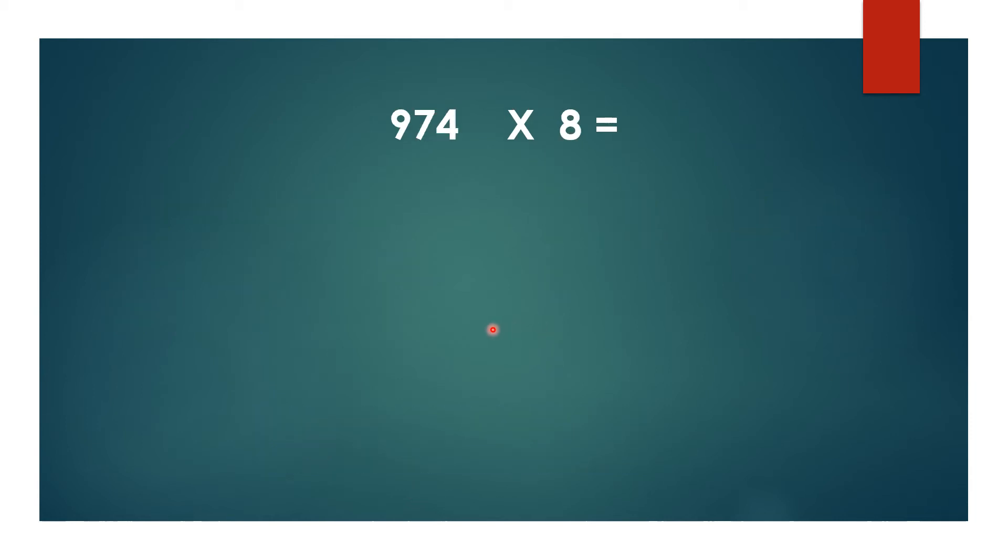Now let's multiply 974 into 8. Three digits here, so the answer is divided into three parts. 4 × 8 or 8 × 4 = 32. Next, 8 × 7 = 56. 8 × 9 = 72.